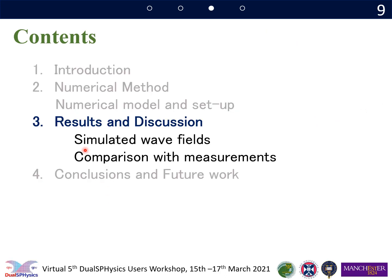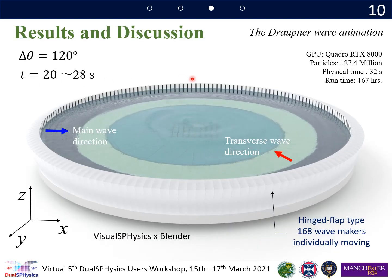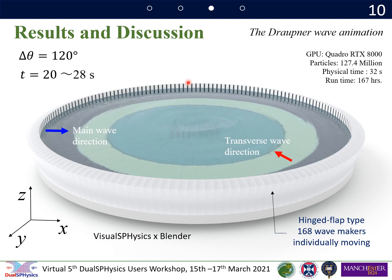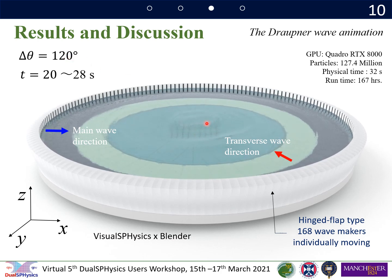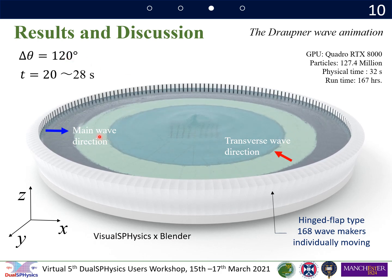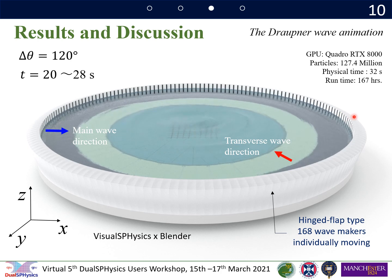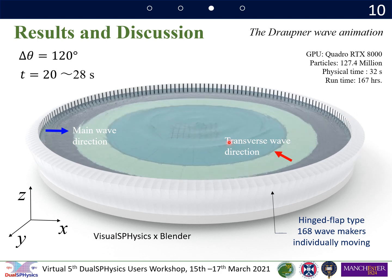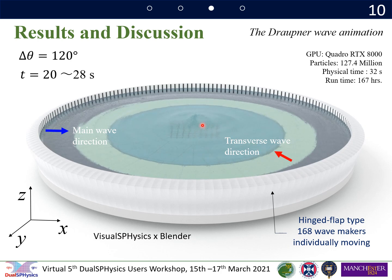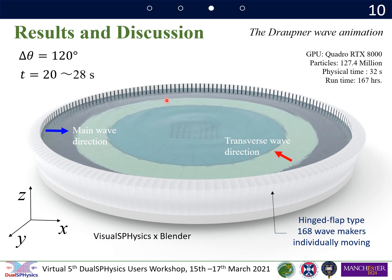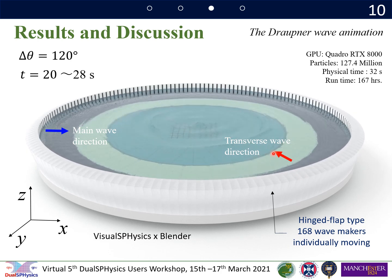So next section, we will show you some numerical results we simulated. So what I'm showing here is a Draupner wave animation we simulated for crossing sea states. We can see the main waves are propagating from left to right in this animation.